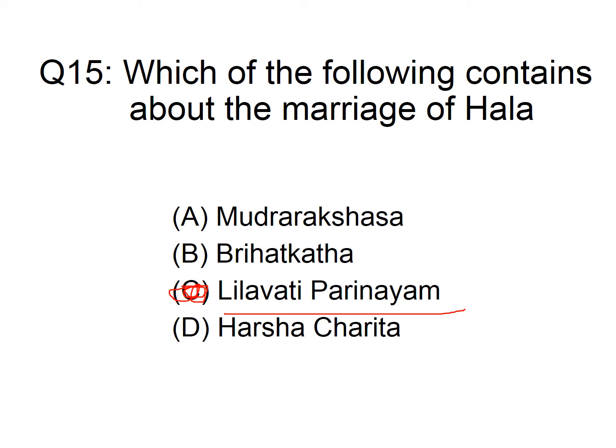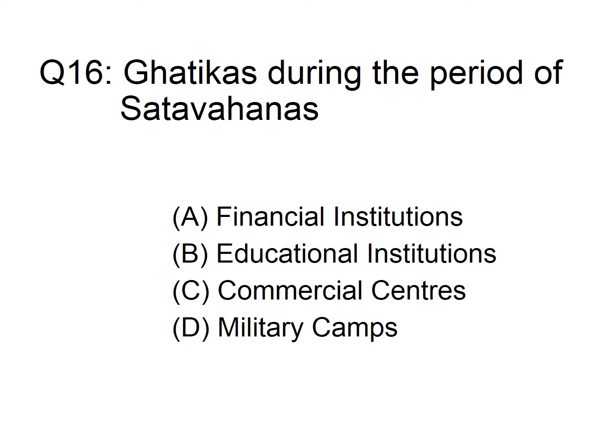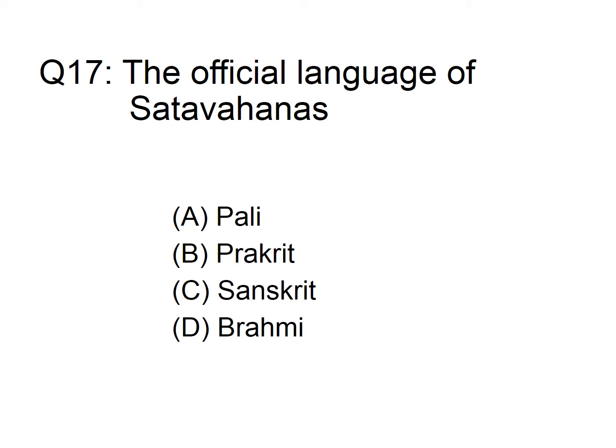Lilavati Pariyanam is a Maharashtri novel written in Prakrit. The inscriptions of Gautamiputra Satakarni were written in which language? Option A: Pali, B: Prakrit, C: Sanskrit, D: Brahmi. The answer is option B, Prakrit.